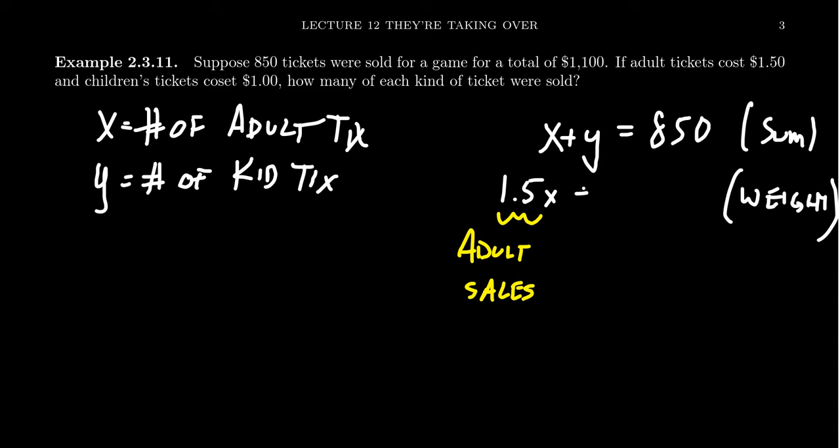If we do a similar thing, if we times the y by one, so children tickets cost $1 per ticket and there were y many tickets sold. When we multiply those together, this is going to give us the sales for the children, the kids sales. If we add together the adult sales and the kids sales, this will add up to be the total sales, which is $1,100 in this situation. This is what I mean by this weighted equation. The adult tickets don't cost the same as the children tickets, but when you mix them together, the total amount is going to be $1,100.